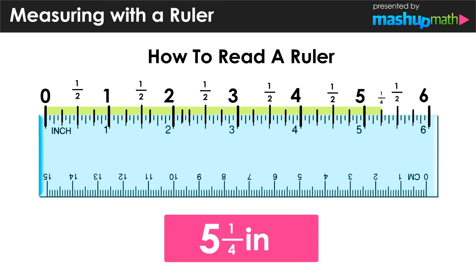So in this case we have a measurement of five and one quarter inches — or five and one fourth. And if we push our length a little bit further so that it's in between one half and the next whole number, we can conclude that this length is equal to five and three quarters, or five and three fourths.